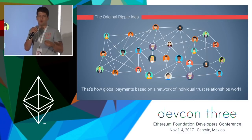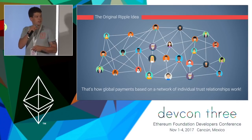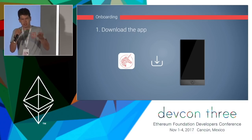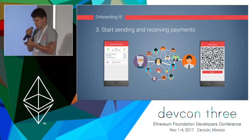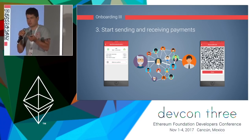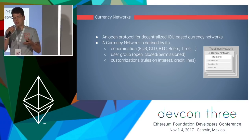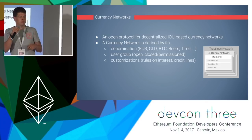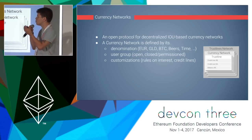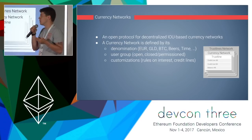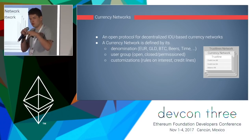That's the basic idea of how money implemented in the social graph could work. To access such a system, you simply download the app, join by creating a trust line with a friend, and then start sending and receiving payments — much simpler than joining an exchange and wiring money. The money is issued on smart contracts called currency networks. These currency networks are highly customizable — they can be denominated in virtually anything: beers, Bitcoin, gold, enchiladas. User groups can be open or closed, and you can customize rules on interest and the specific value of credit lines.